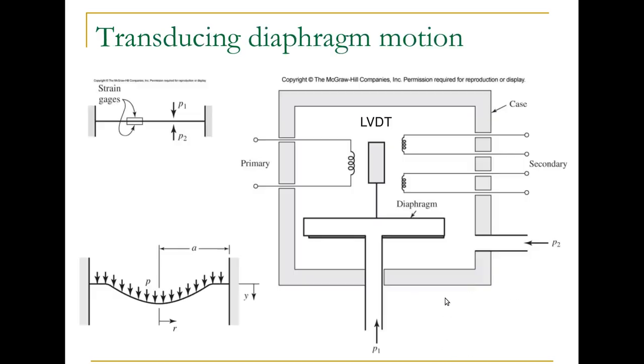And a couple of means for measuring the deflection are to use strain gauges on the diaphragm. So that incorporates materials, mechanics of materials theory, in order to get the displacement from the strain. Or we could measure the displacement directly here with an LVDT. You could also use a capacitive displacement transducer. Any way of measuring the displacement directly can give you pressure.